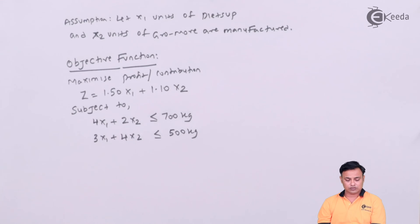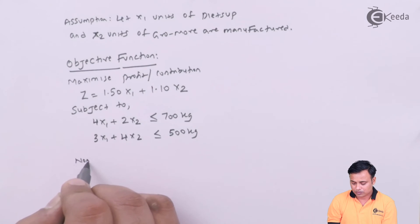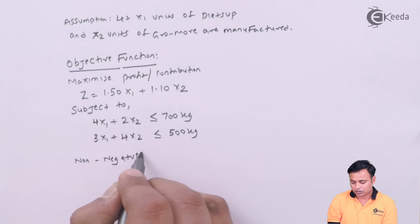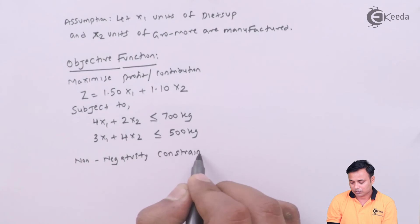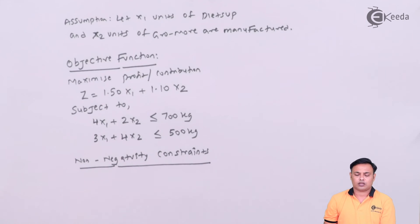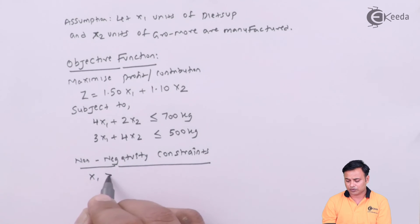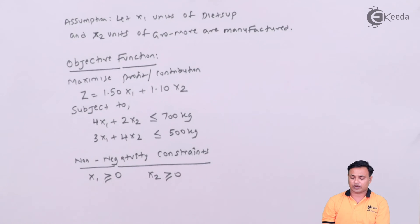We are done with the basic assumptions. Now comes the last part, non-negativity constraints. x1 and x2 is the quantity we have assumed, it can't be negative because it is a physical quantity. So x1 greater than or equal to 0, x2 greater than or equal to 0. These are my non-negativity constraints.